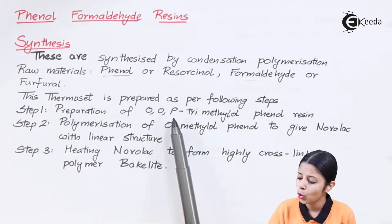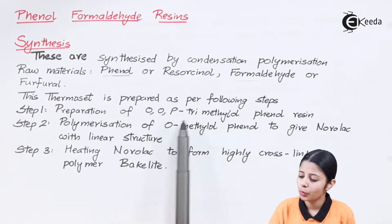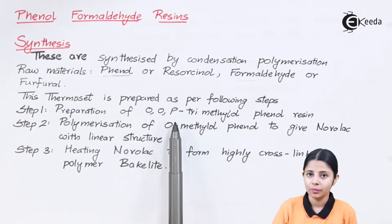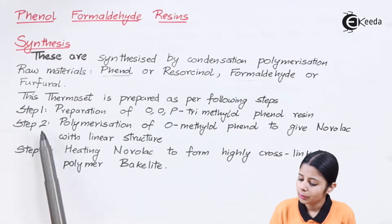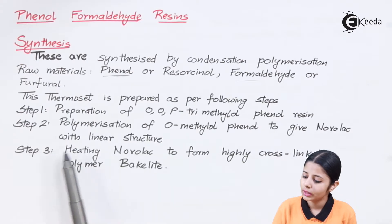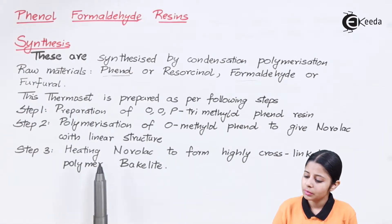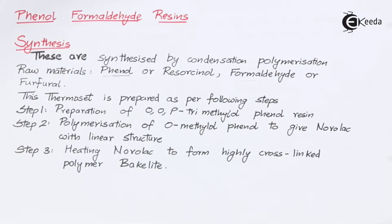The first step is preparation of OOP trimethylol phenol resina — where OOP stands for ortho, ortho and para, the three positions on the benzene ring. Step two is polymerization of O-methylol phenol to give Novolac with a linear structure. The third step is heating Novolac to form a highly cross-linked polymer, that is Bakelite. So my final product will be Bakelite, a very strong solid structure.